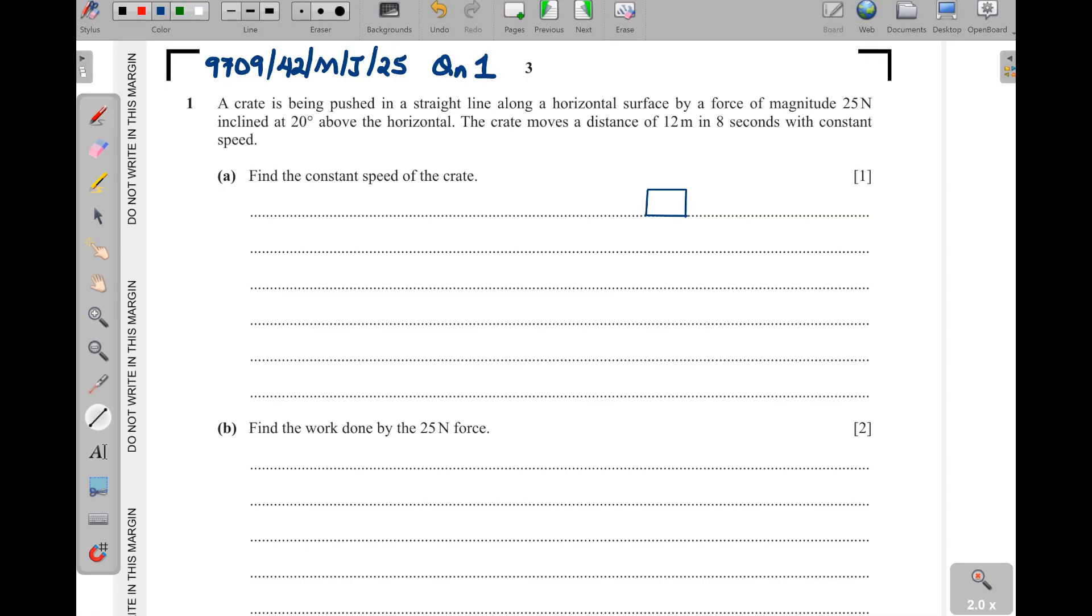We are having this force applied to this particle and it is at a certain angle, 20 degrees. So the force is coming like that and it is 25 newtons. Then, since the crate is on the floor, it has its weight acting downwards, the mg, and we also have the normal reaction.